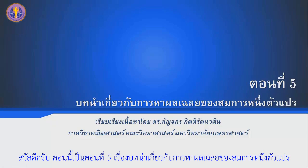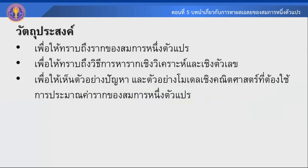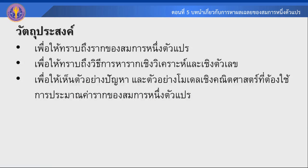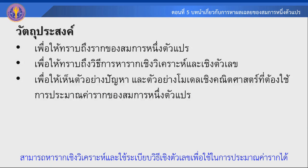สวัสดีครับ ตอนนี้เป็นตอนที่ห้า เรื่องบทนำเกี่ยวกับการหาผลเฉลยของสมการ 1 ตัวแปร วัตถุประสงค์ของตอนนี้ก็คือเพื่อให้ทราบถึงรากของสมการ 1 ตัวแปรว่าเป็นอย่างไร สามารถหารากโดยวิธีวิเคราะห์ และใช้ระเบียบวิธีเชิงตัวเลขเพื่อช่วยในการประมาณค่ารากได้